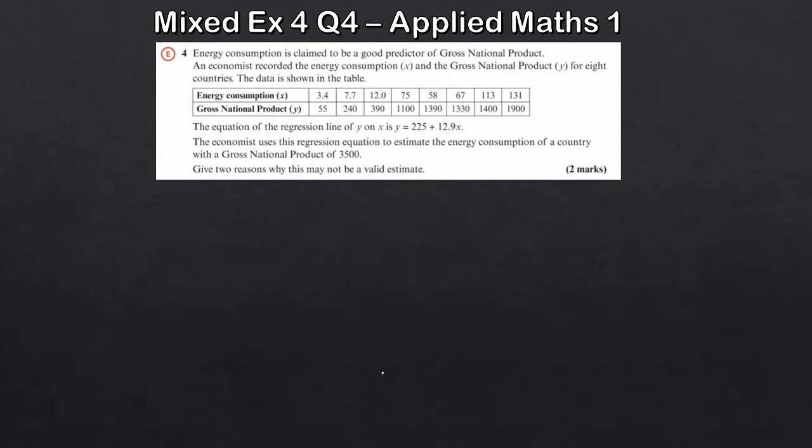So we're asked to give two reasons why this might not be a valid estimate. So what they're trying to do here is use this regression equation to estimate the energy consumption of a country with this gross national product of 3,500. So question four, what two reasons can we give? Well the first thing is, if we look at our set of y values here, the largest one is 1,900. Now we're being asked to estimate the energy consumption when our y value is 3,500.